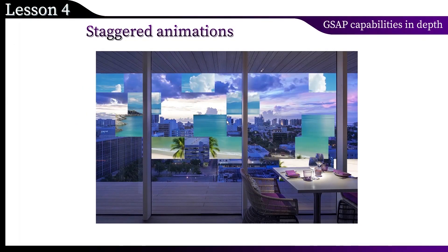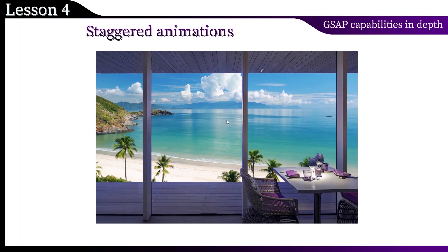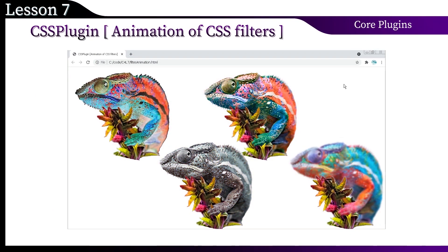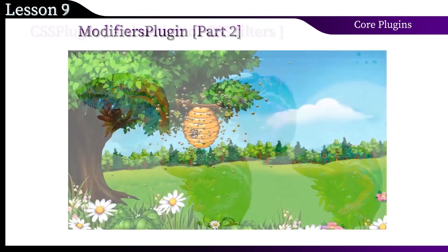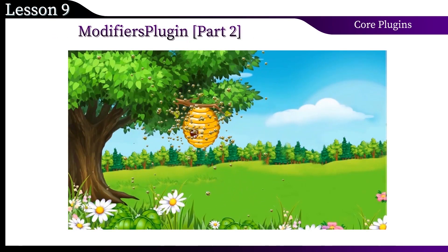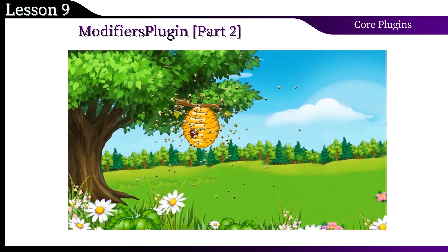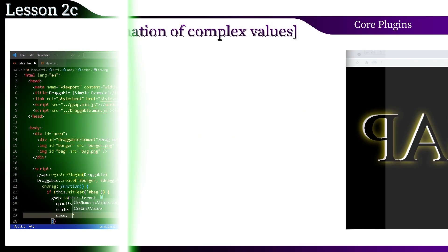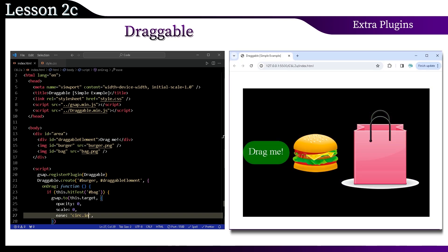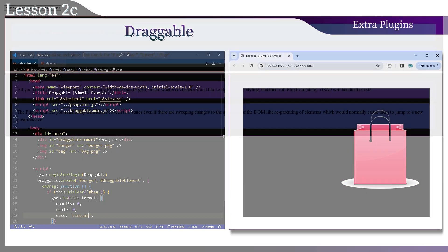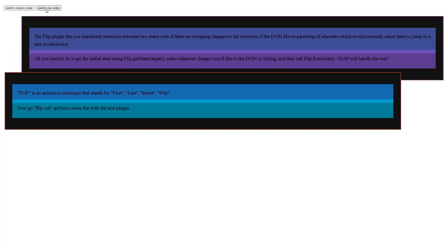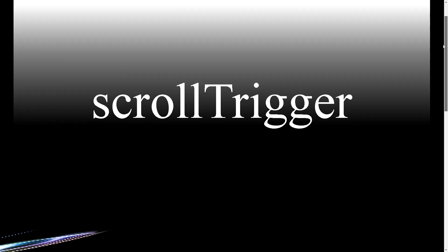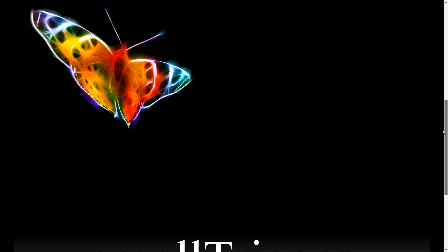Here you are going to explore the main core of the GSAP library, as well as get acquainted with the built-in and external plugins. The material in this course is clearly structured and offered sequentially from simple topics to more complex ones. Lessons begin with theoretical information and end with practical examples. At the beginning you will find basic concepts, and in the middle of the course there is information about the purpose, syntax, and features of the main methods and properties of the GSAP library.